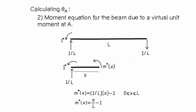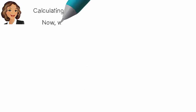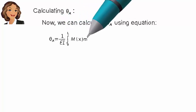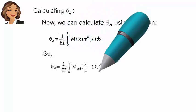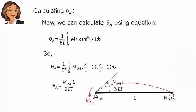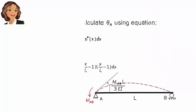Moment equation for the beam. Now we can calculate theta A using the equation: moment equation for the beam due to M_AB.